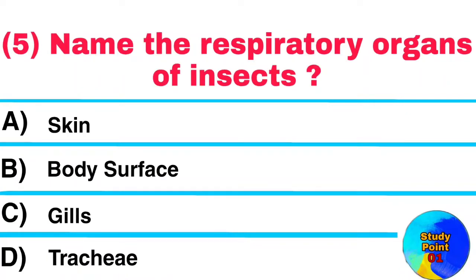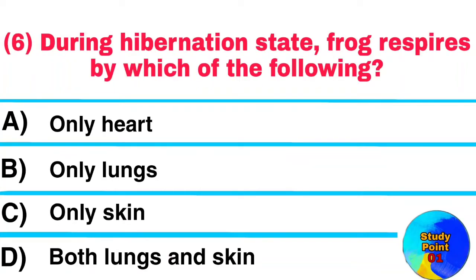Question No. 5. Name the respiratory organs of insects. Answer: Tracheae. Question No. 6. During hibernation state, frog respires by which of the following? Answer: Only skin.